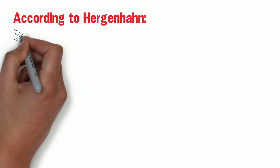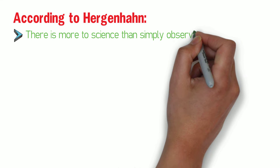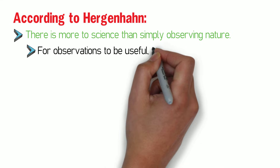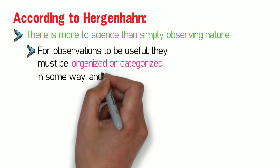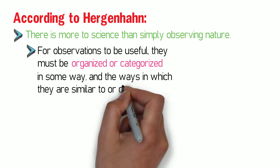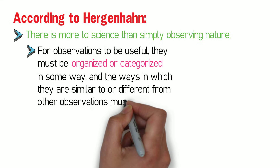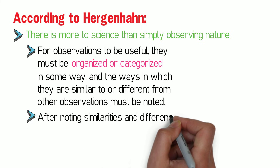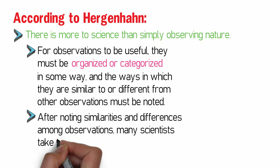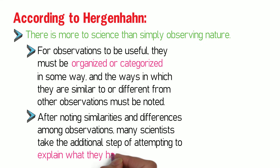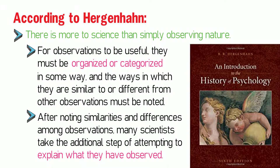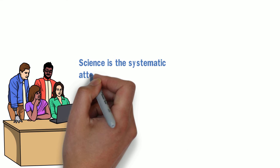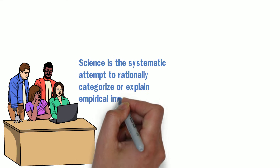But according to Herjohan, there is more to science than simply observing nature. For observations to be useful, they must be organized or categorized in some way, and the ways in which they are similar to or different from other observations must be noted. After noting similarities and differences among observations, many scientists take the additional step of attempting to explain what they have observed. From this discussion, we can draw a general conception of science as a systematic attempt to rationally categorize or explain empirical investigations.